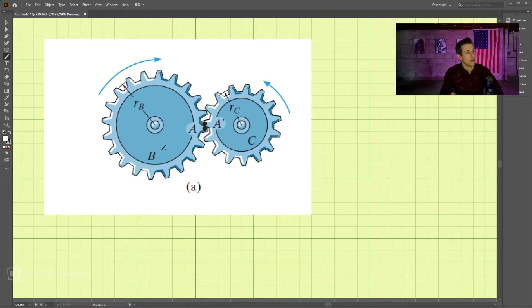So we have two gears here, B and C, and usually we're given an angular velocity of one, and we're looking for the angular velocity of the other.